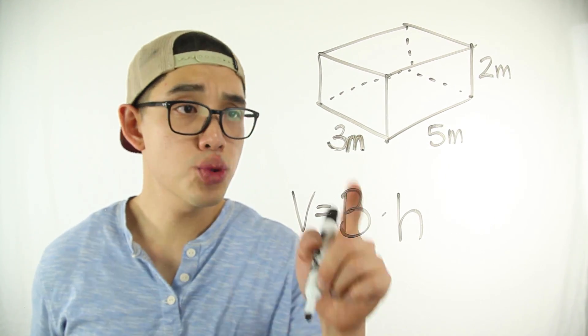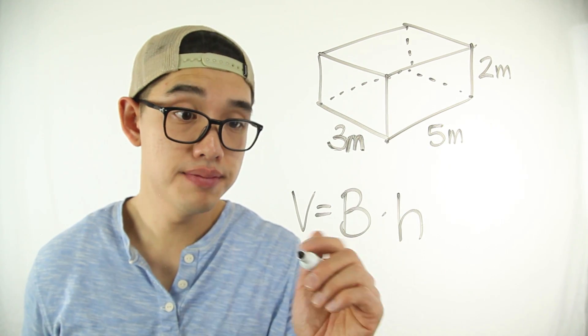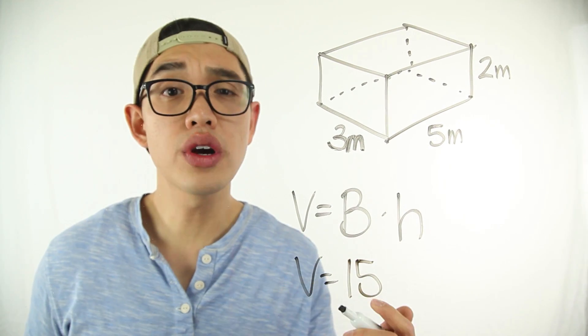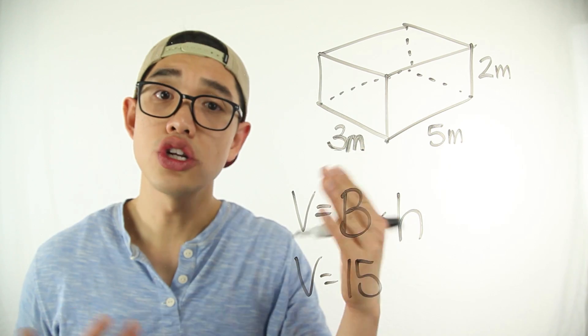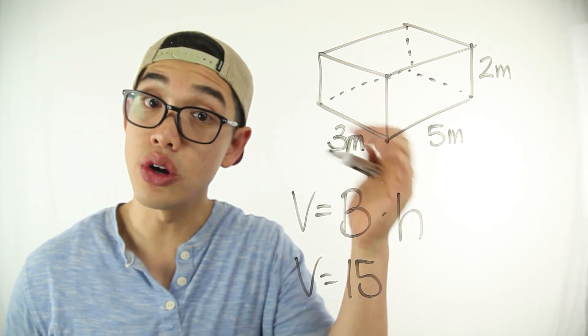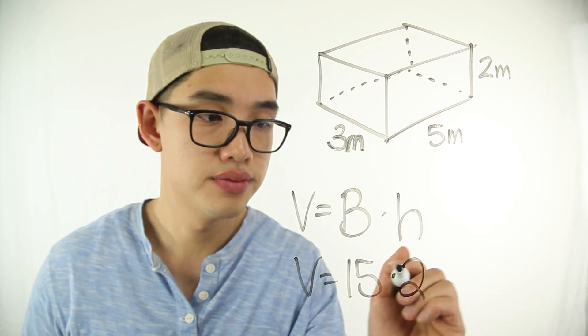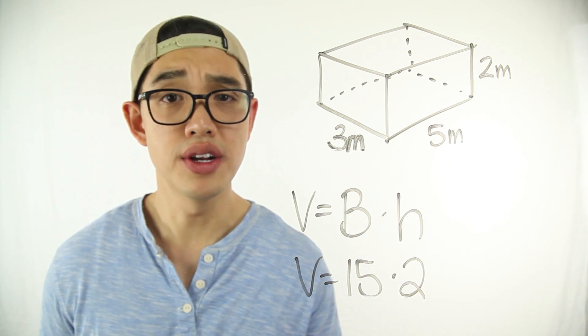The base of this problem is going to be 3 times 5 or 15. And then we're going to multiply it by the height which is 2 because both of the layers are going to be the same. And that's going to give us a volume of 30 cubic meters.